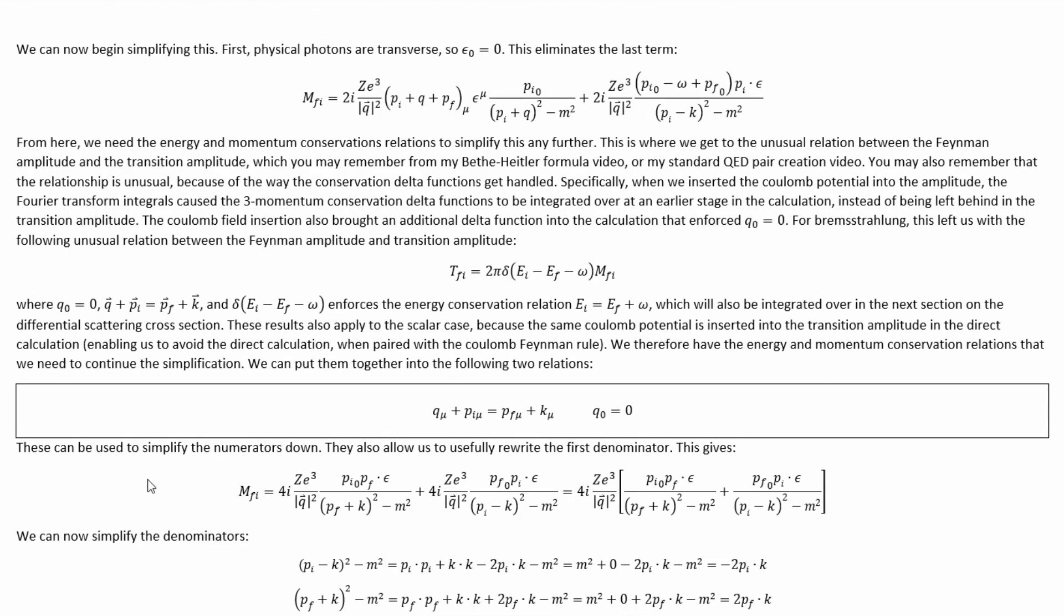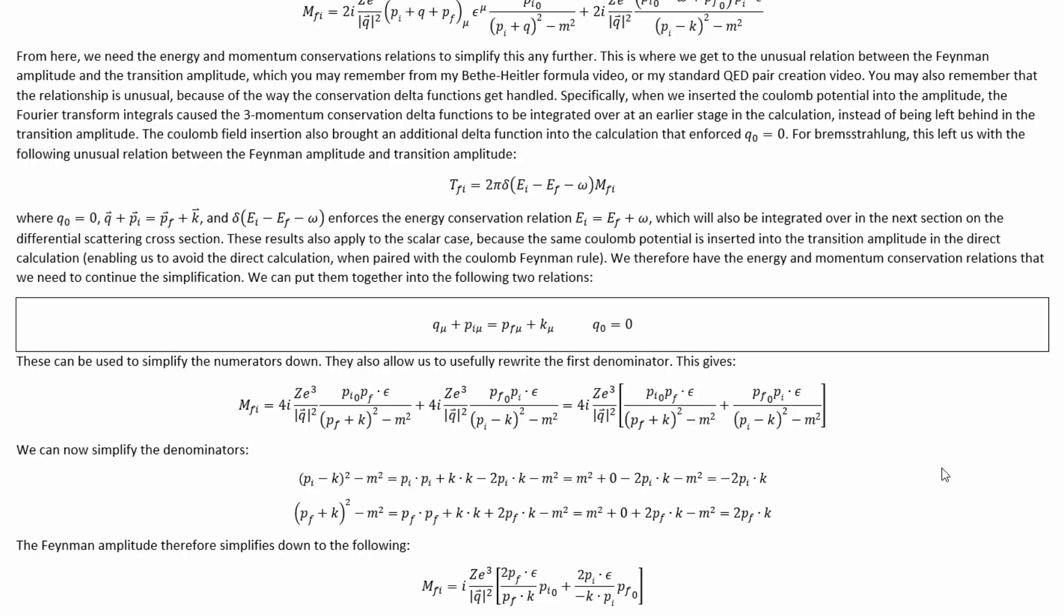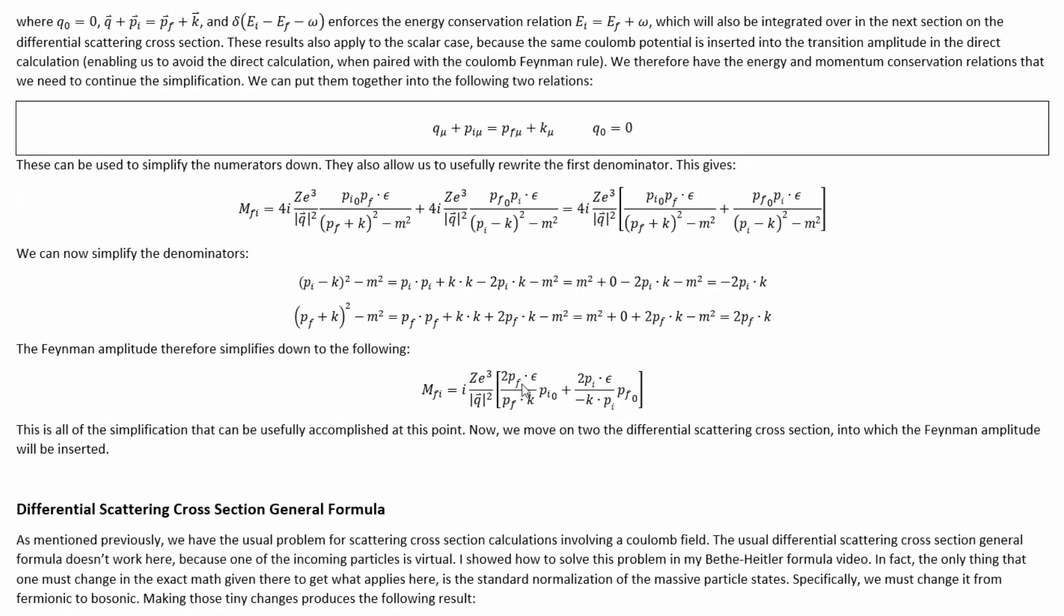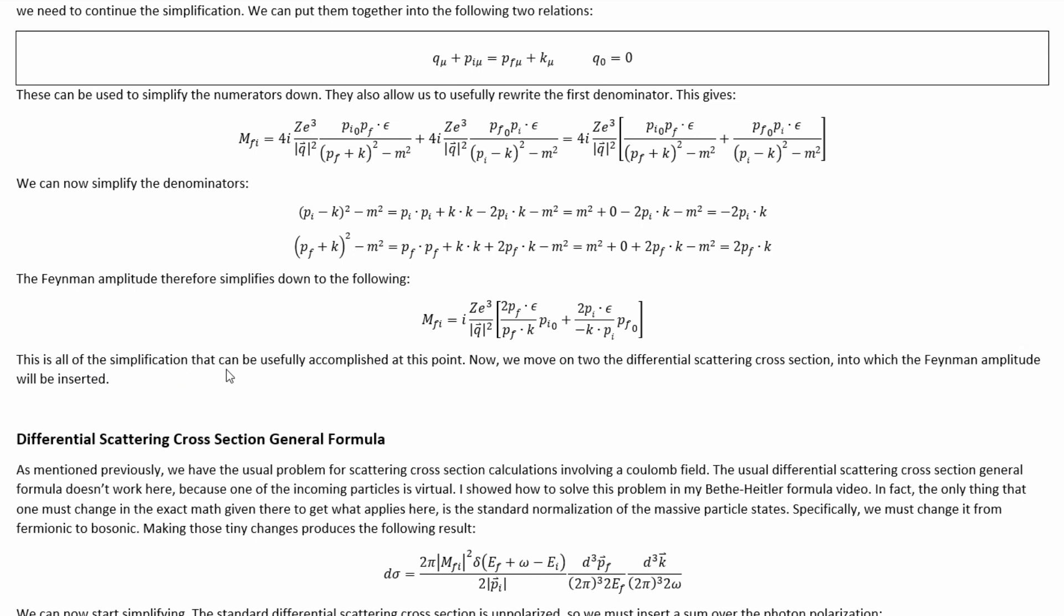This conservation relation can be used to simplify down the denominators, but then also to rewrite the denominator usefully to eliminate Q from the denominator. That gets us to here, and then we can simplify down the denominators in a very straightforward way, and they do simplify down quite a bit. That ultimately gets us to here. This is all of the simplification that can be usefully accomplished up till this point.